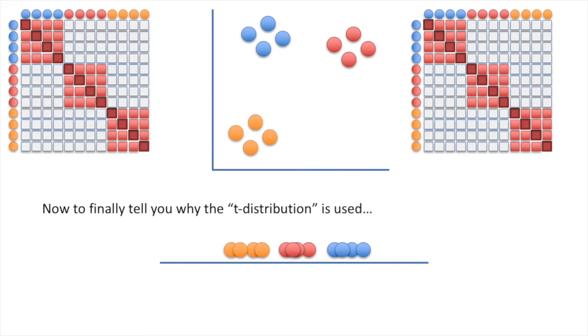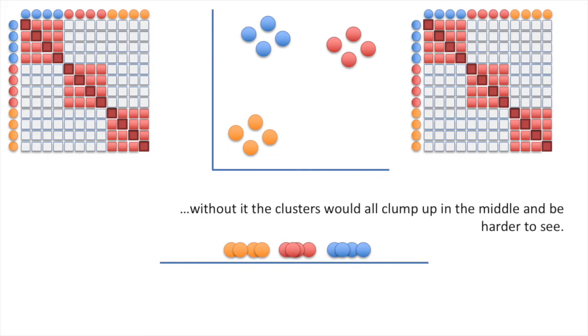Now to finally tell you why the t-distribution is used. Without it, the clusters would all clump up in the middle and be harder to see. Triple BAM! And now we know how t-SNE works. I've used a really simple example here, but the concepts are the exact same for more complicated data sets. Hooray!